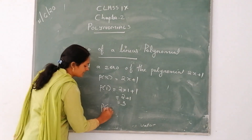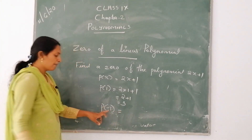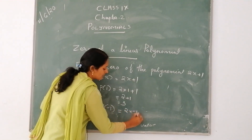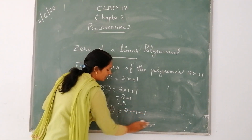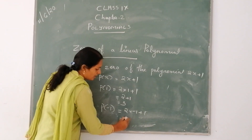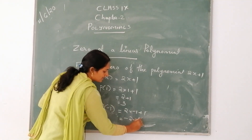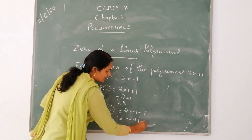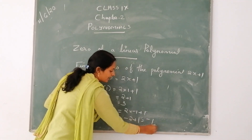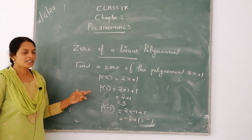Next, we will put minus 1. So, 2 into minus 1 plus 1. That is equal to minus 2 plus 1. That is equal to minus 1. It is not equal to 0.